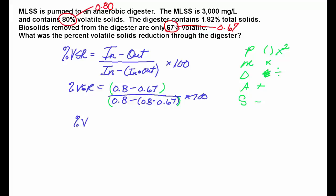I end up with percent volatile solids reduction is 0.8 minus 0.67 is 0.13. So that's just that top piece. And then on the bottom, we're going to end up with 0.8. And then because this is inside of parentheses, we have to do that first. That 0.8 times 0.67, which ends up being 0.536.